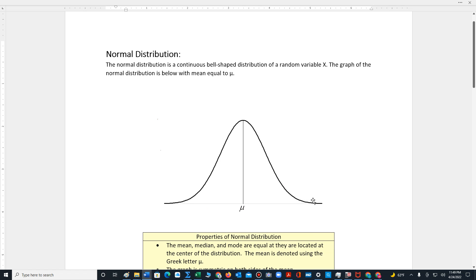The graph of the normal distribution is bell-shaped, and the mean is located at the center.